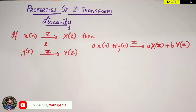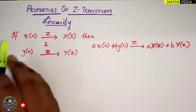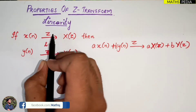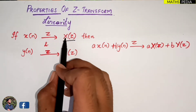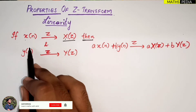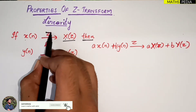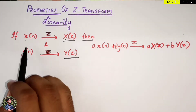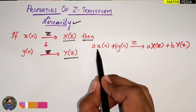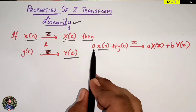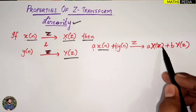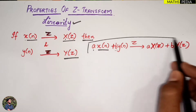In this video we will see the linearity property of Z transform. The statement is: if x(n) is a signal with Z transform X(z), and y(n) is another signal with Z transform Y(z), then for the linearity property, a·x(n) plus b·y(n) has Z transform equal to a·X(z) plus b·Y(z). This is the result of the linearity property.